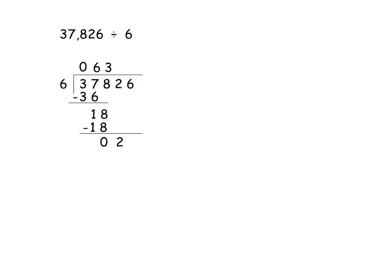Now, 2 is smaller than 6 so I can't divide 2 by 6. So, I put a 0 as the quotient and I bring down the next digit 6. Divide 26 by 6. It will go 4 times. 26 minus 24 is 2. So, I got the quotient and remainder. Quotient is equal to 6304 and remainder is equal to 2.